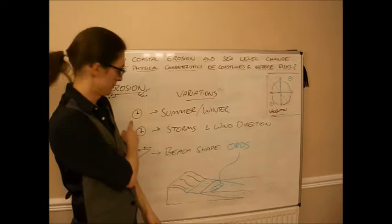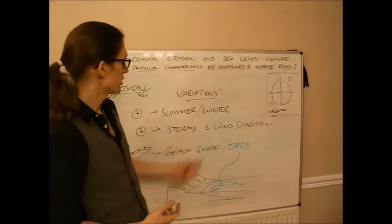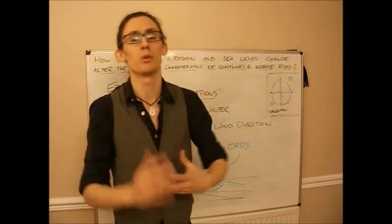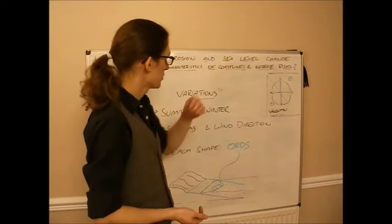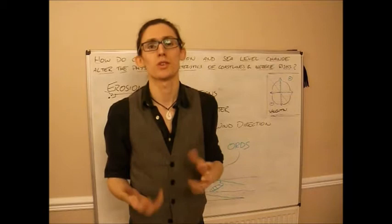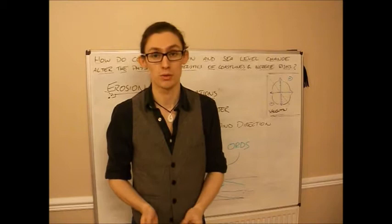Erosion rates change according to time, and also according to space. So there are variations between summer and winter erosion. Winter storms tend to lead to more destructive waves, just because of the nature of the oceans, and also because of the nature of winter and temperatures. The rocks tend to be weaker, more chance for freeze, thaw, weathering, and other weathering processes.